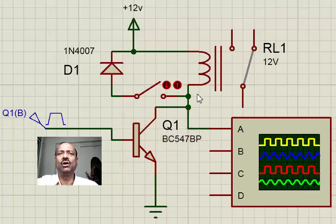But when we switch it off, supposing the transistor switches off and then the relay in the process is switched off, what happens?